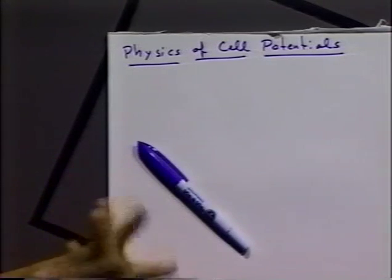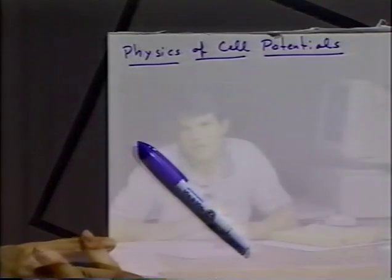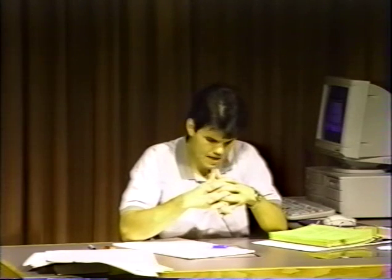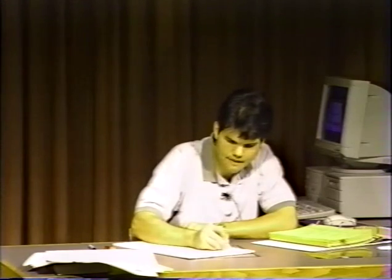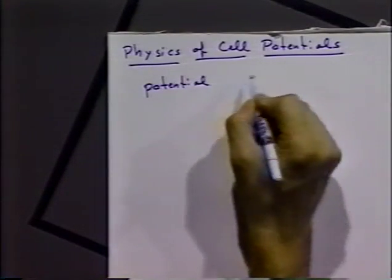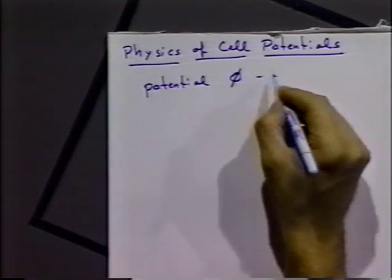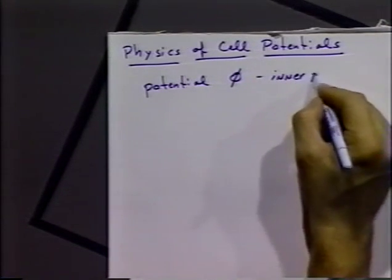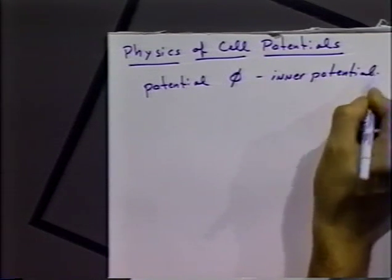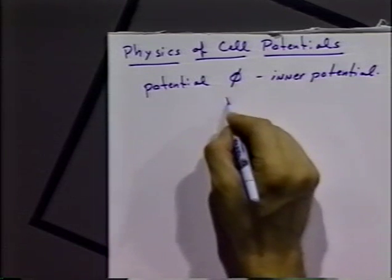Whenever we have a given phase — a given conducting phase — we can think about that phase as being isolated by itself, sitting in a vacuum. We can ask ourselves: what is the potential of that phase? The definition of that potential is as follows. The potential will be given the symbol phi, and that is often called the inner potential. That potential is in volts.